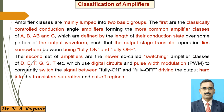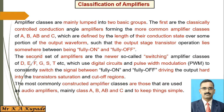The second group is the newer switching amplifier classes — classified as D, E, F, G, S, and T — which use digital circuits and PWM (pulse width modulation) technique to switch the signal between on and off, driving the output transistors hard into saturation and cutoff regions. These transistors are either fully switched on or fully switched off.